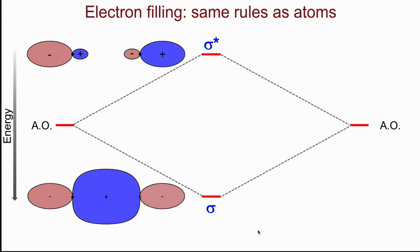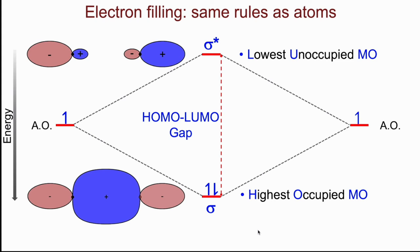The rules for the electron filling of the molecular orbitals are the same as we have seen before for atomic orbitals. So in this case, let's say we have in the constituent atomic orbitals one electron in each. Each MO can accommodate two electrons and they will fill first the orbitals of the lower energy. In this case, both electrons end up in a sigma-bonding orbital. The sigma-MO is the highest occupied MO, or the so-called HOMO. And the sigma-star is the lowest unoccupied MO, the LUMO level as it is called. And the energy gap is called the HOMO-LUMO gap.